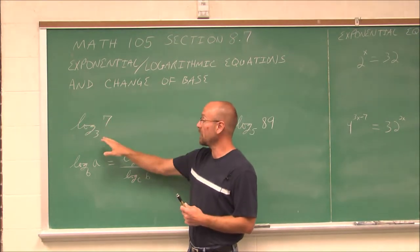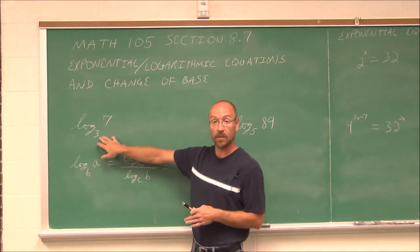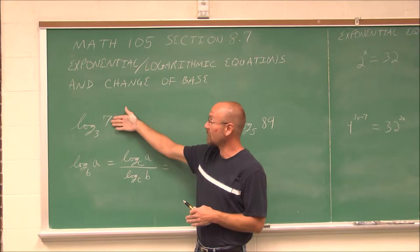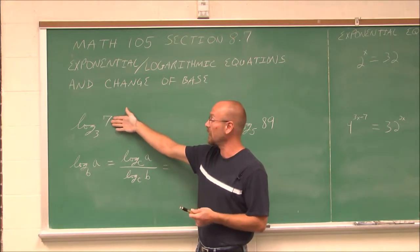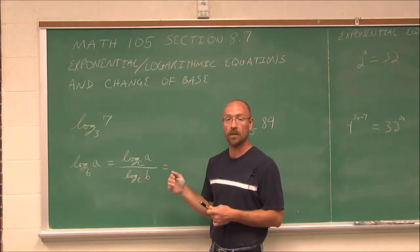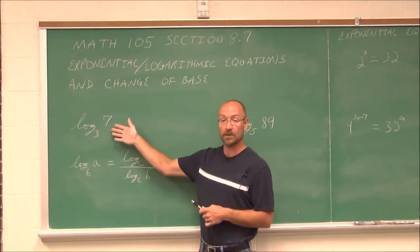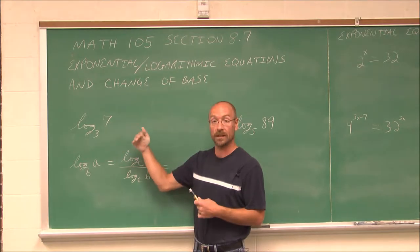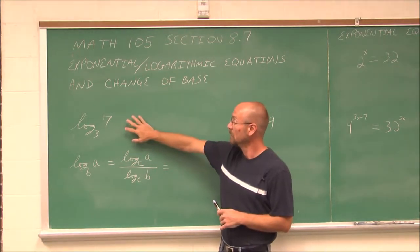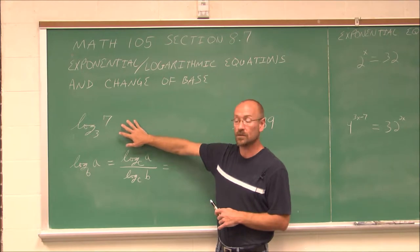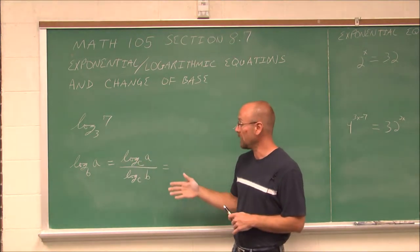I could estimate it and say, I know 3 to the first power is 3, and 3 to the second power is 9. The argument of 7 is somewhere between 3 and 9, so the value is somewhere between the powers of 1 and 2. But to find the actual calculator value — closer than this rough estimate — I would have to do a change of base.